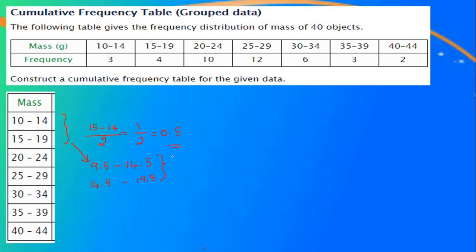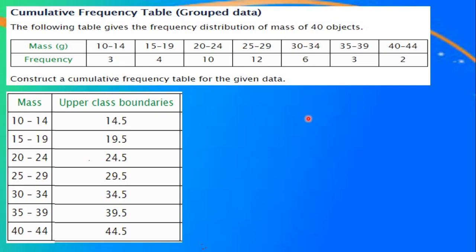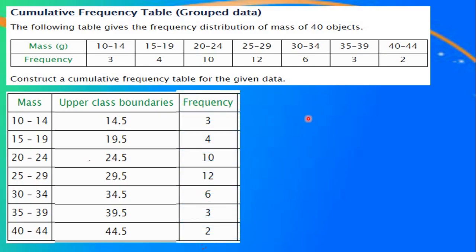To form the cumulative frequency table, we need only the upper class boundaries. So we write the upper class boundaries as 14.5, 19.5, 24.5, 29.5, 34.5, 39.5 and 44.5. Now let us write the corresponding frequencies from the question.